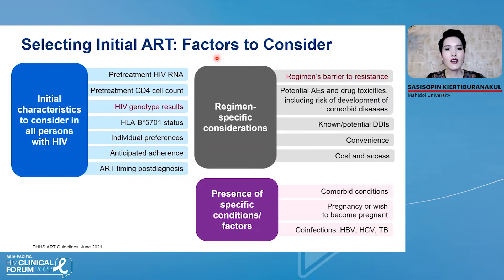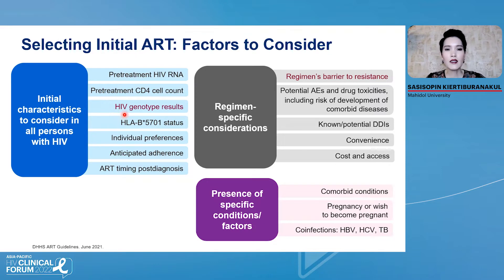This slide shows factors to consider when selecting initiation of ART. Resistance profile and HIV genotype results are important factors for initial characteristics to consider in a person with HIV. However, in some countries in Asia, we cannot do HIV genotype resistance testing for every new HIV patient. Also, the regimen's barrier to resistance is one of the important factors to consider for regimen-specific considerations.